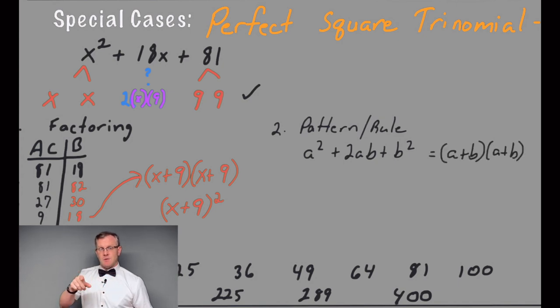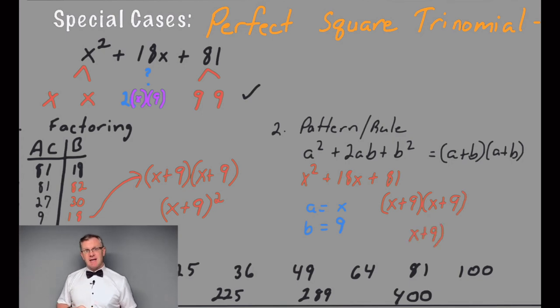You know the trick because A is 1 right there. x plus 9 times x plus 9 simplifies down to x plus 9 squared. Or you can use that pattern. A squared plus 2AB plus B squared. In this case, my A is going to be x, my B is going to be 9. Substitute that back in. x plus 9, x plus 9. That works out to be x plus 9 squared.